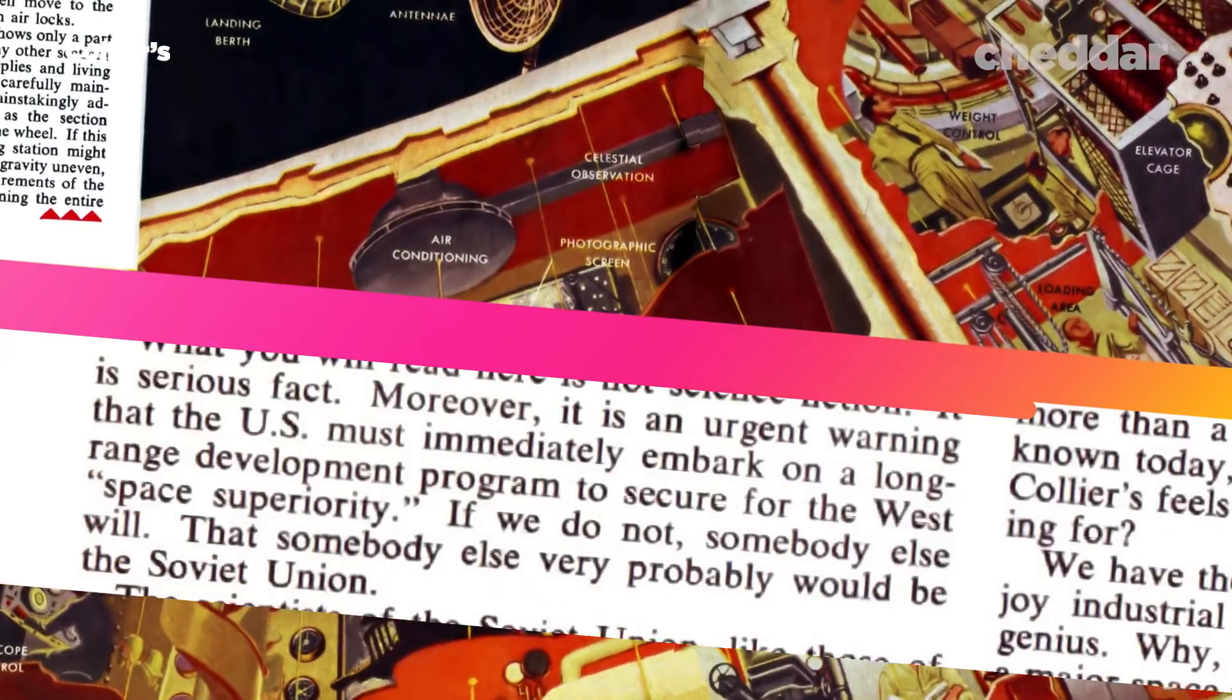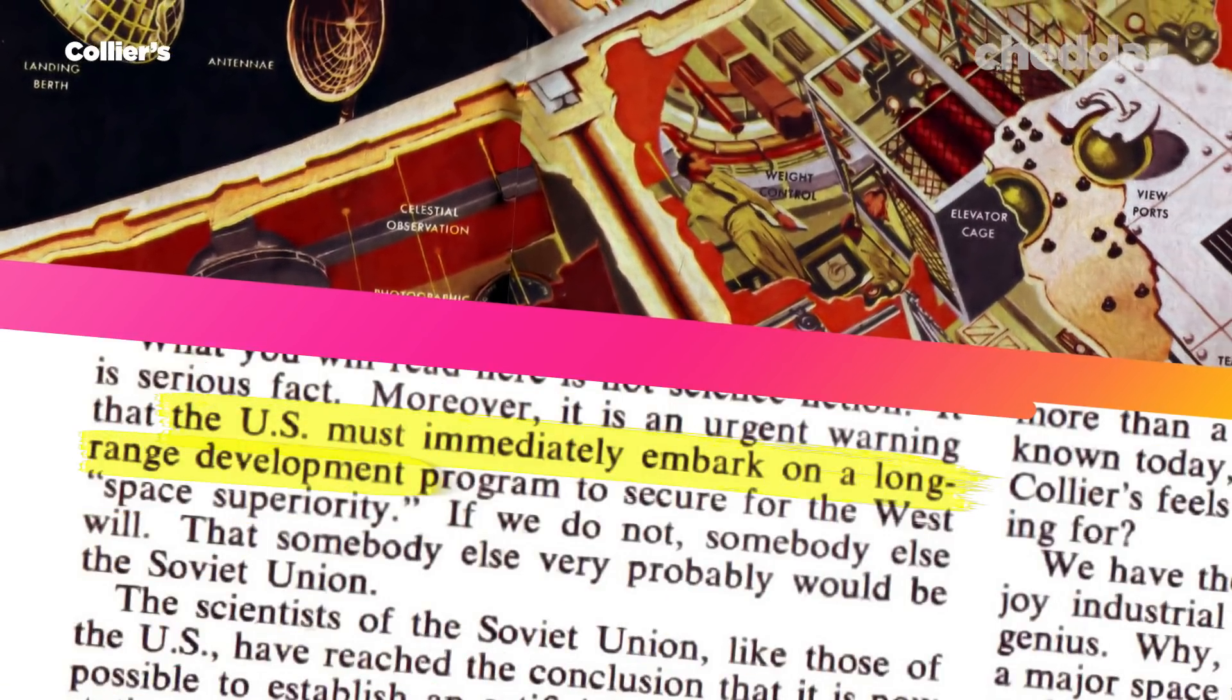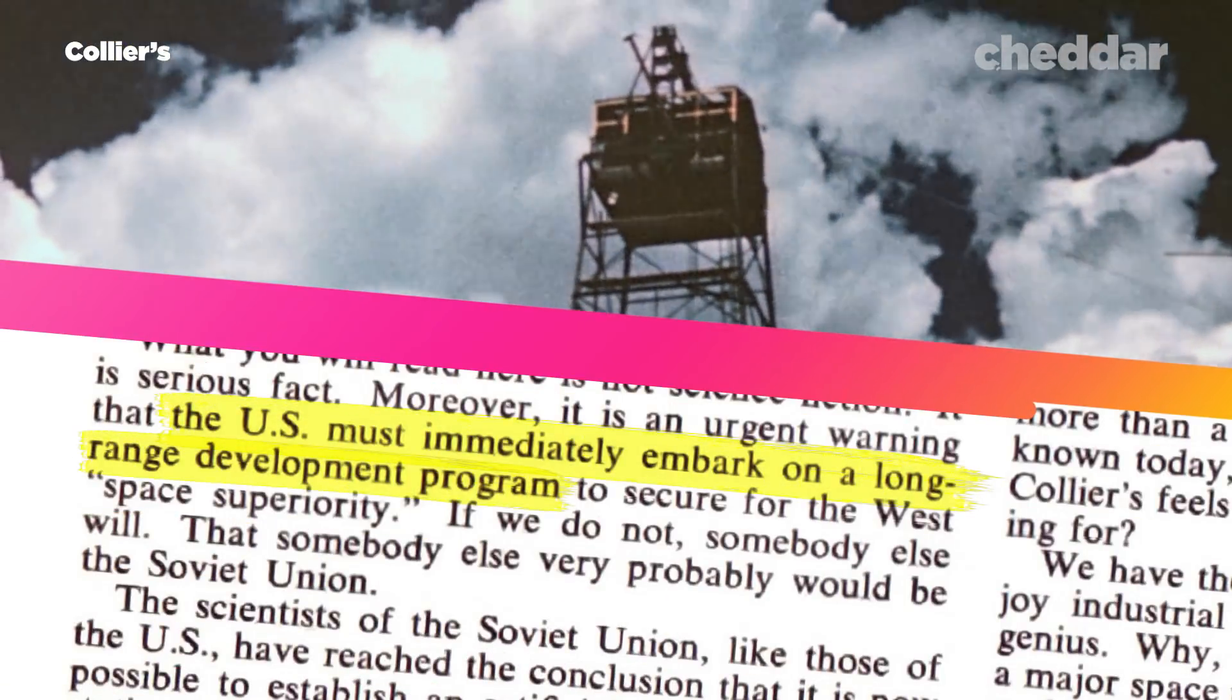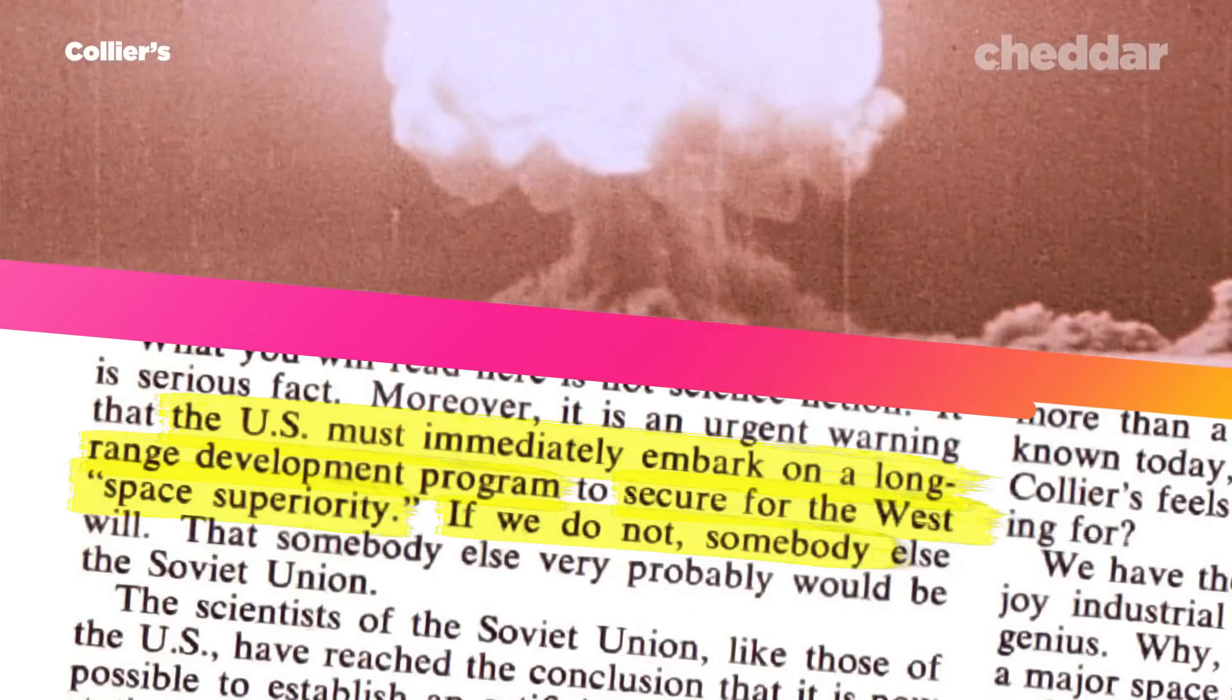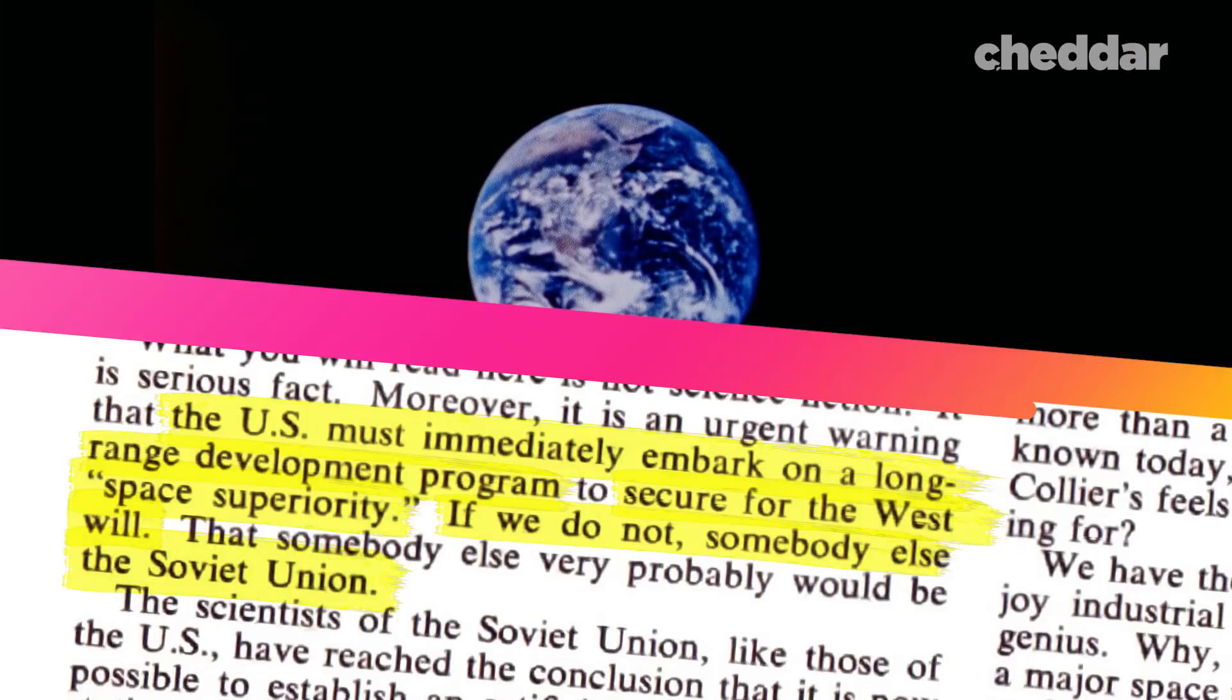The series' opening text warned that the US must embark on building this station like a new Manhattan project, aimed at securing for the West space superiority. If we don't, it reads, the Soviets will, and whoever fields this station first will control the Earth.